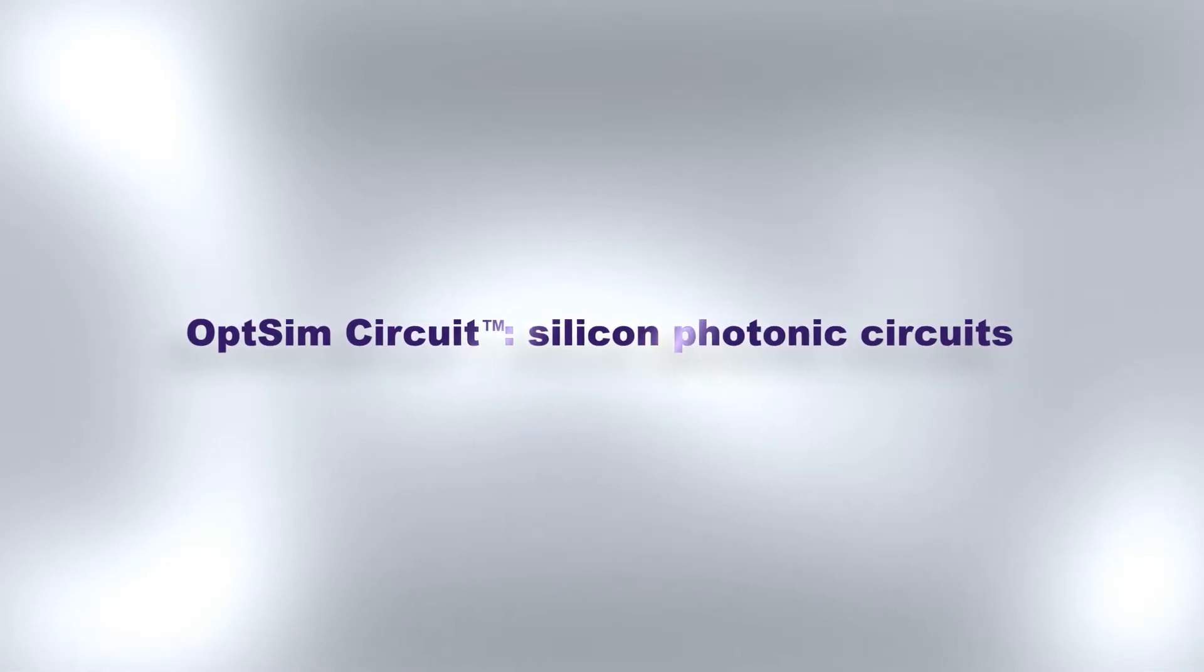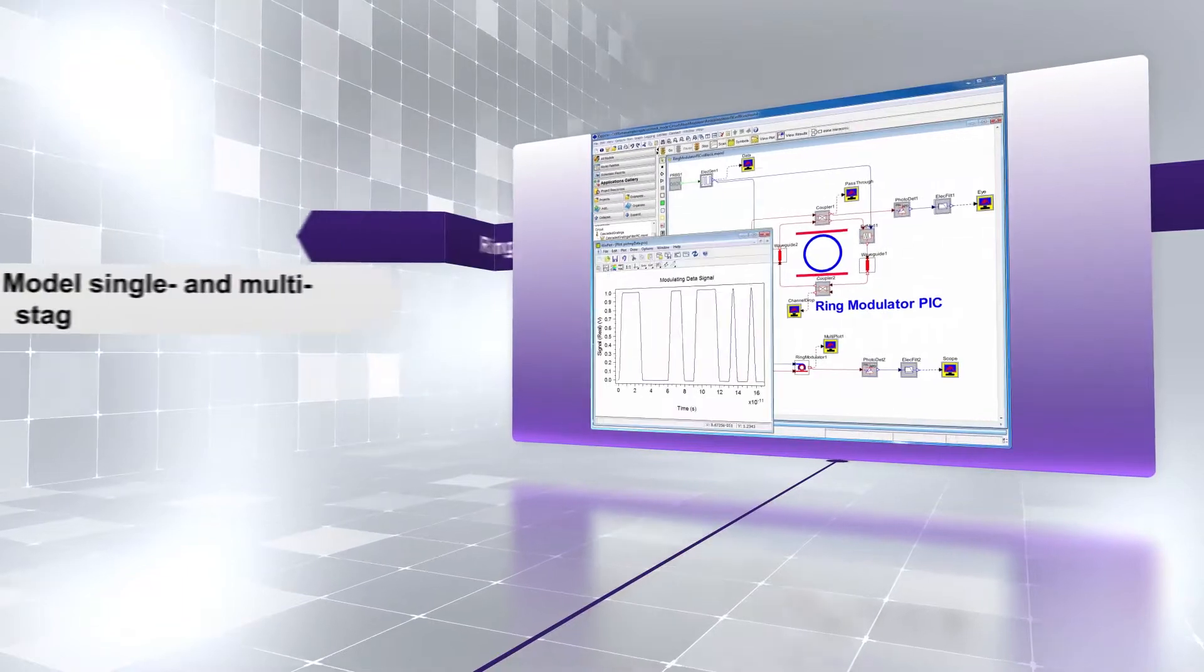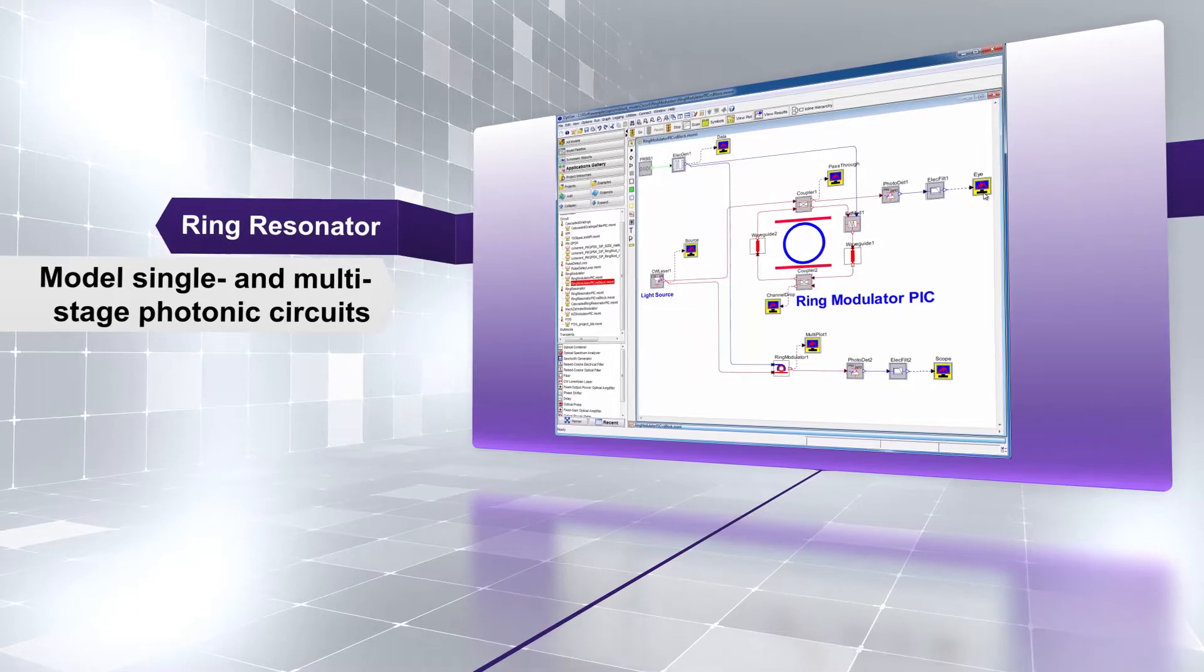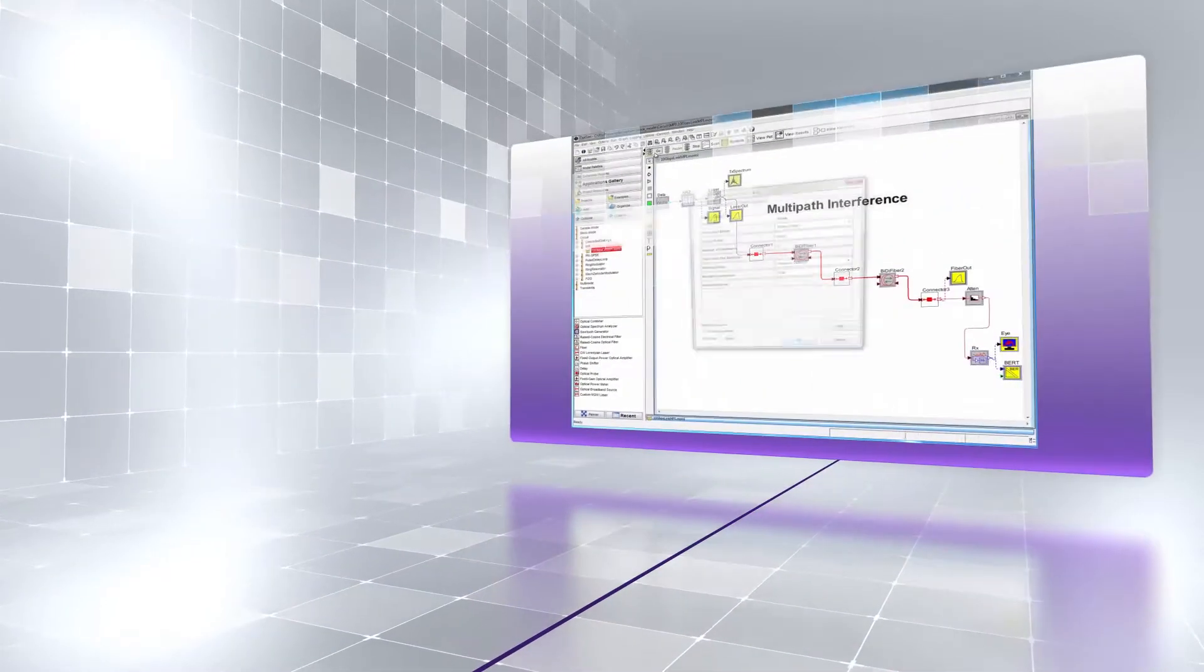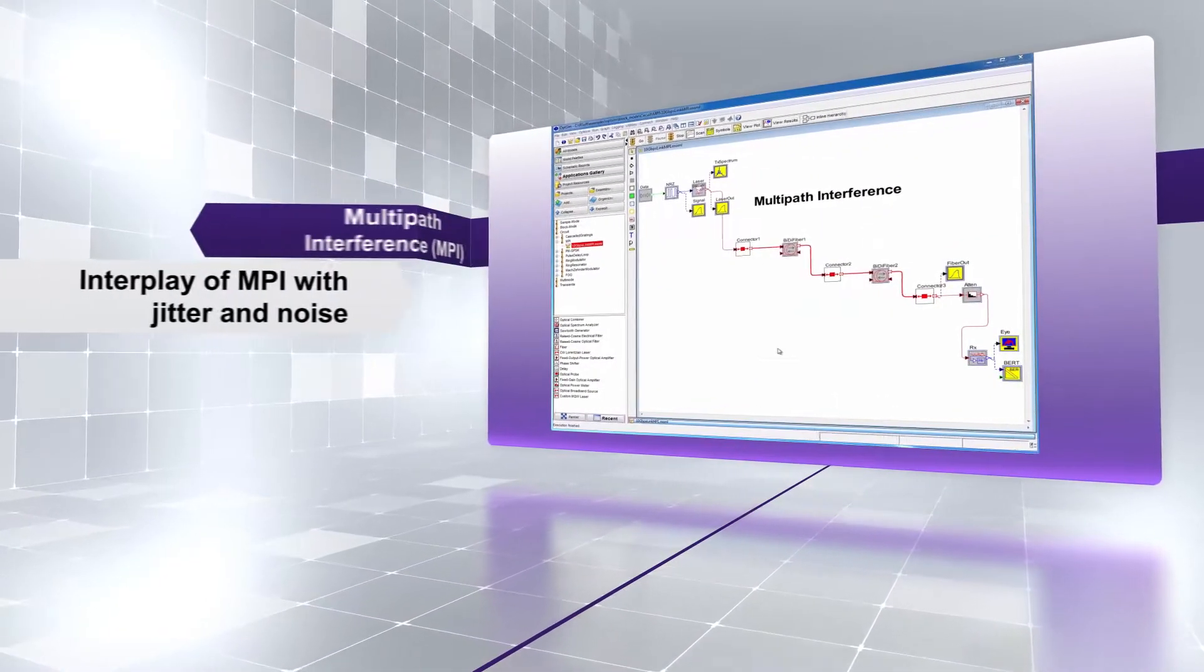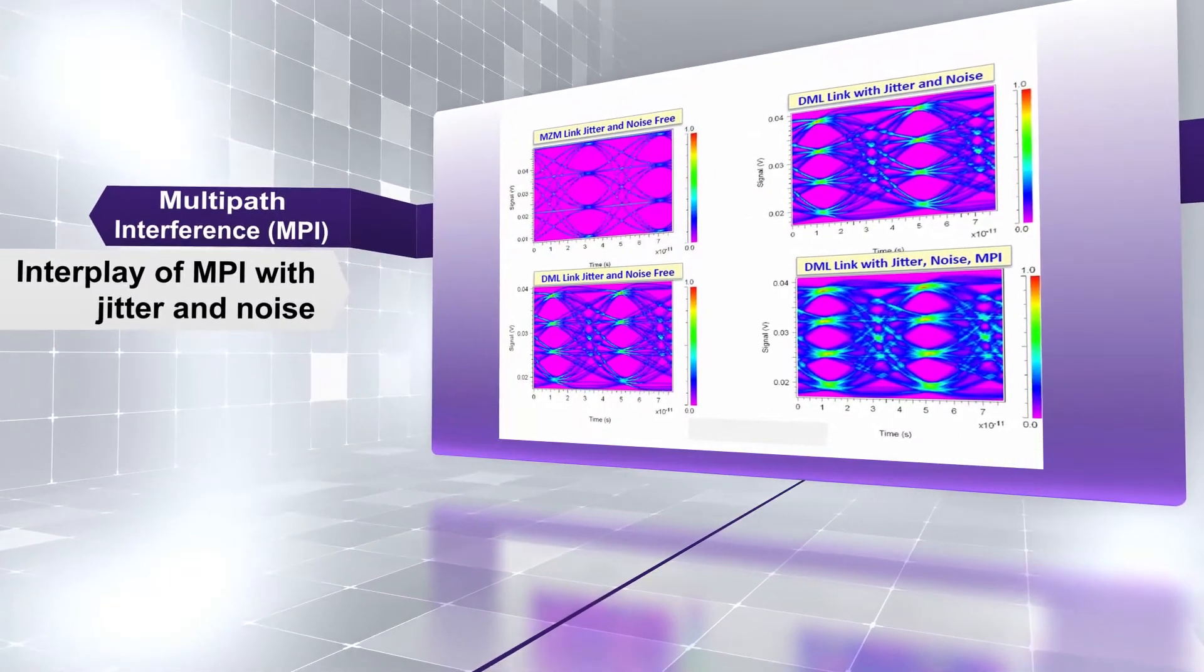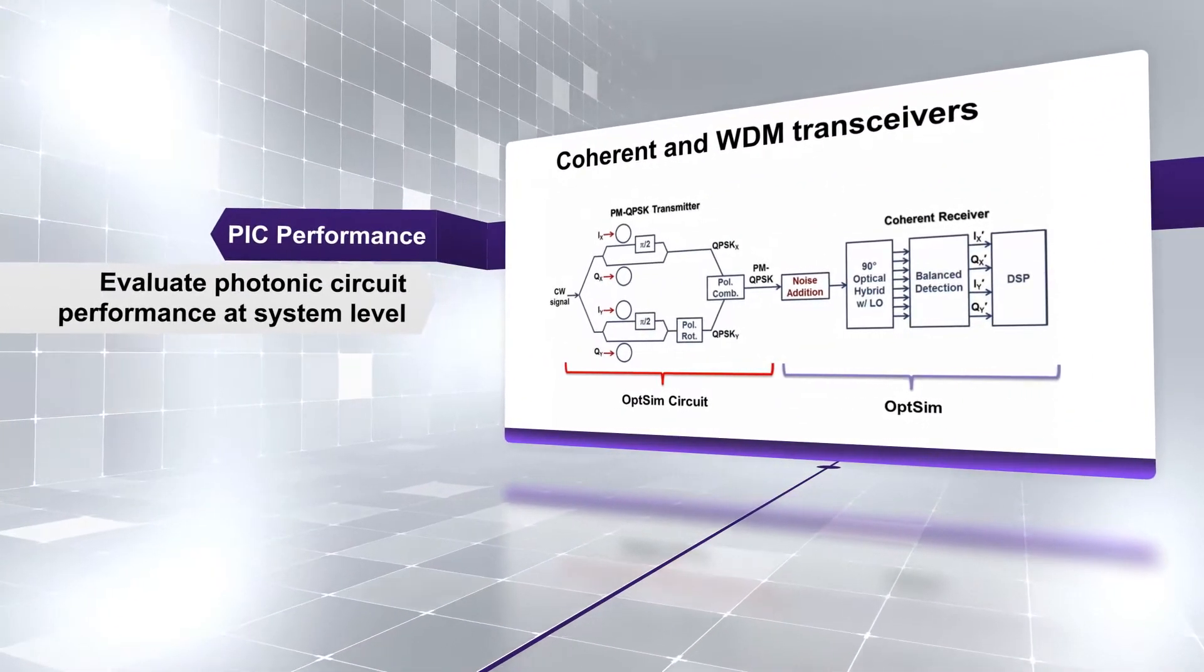Opsim Circuit is a modeling tool for single and multi-stage photonic circuits. It comes with a rich library of circuit elements and foundry PDKs. Opsim Circuit can be used as a standalone product or as an add-on to Opsim. Opsim Circuit takes into account full bi-directional interactions of optical and electrical signals, such as reflections, resonances, and multipath interference from photonic components. When used together, Opsim Circuit and Opsim offer a powerful platform to test the performance of photonic circuits in a system.